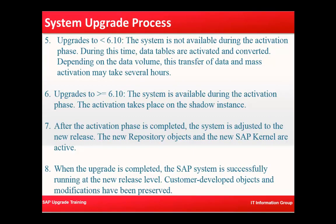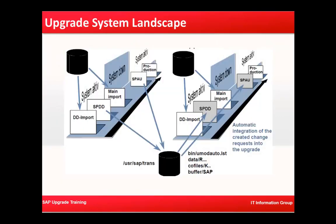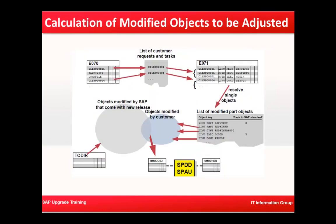We have to make sure that we look at each and every SAP standard object modified by the client and decide what to do with those modifications — do we need to adopt them, do we need to adopt the SAP-supplied version and override those modifications, or do we need to merge the new functionality with the modifications made? That decision making is done in the SPDD phase. There is a file called umod_auto.lst — the SPDD and SPAU transport is kept in this file and executed during the main import phase.